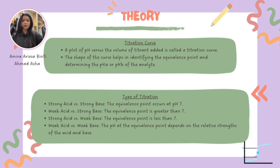Lastly, the different types of acid-base titration and how the equivalence point varies with each type. First, strong acid versus strong base: in a strong acid-strong base titration, the equivalence point occurs at a pH of 7. This is because the acid and base completely neutralize each other, resulting in a neutral solution.